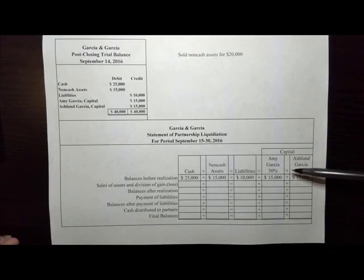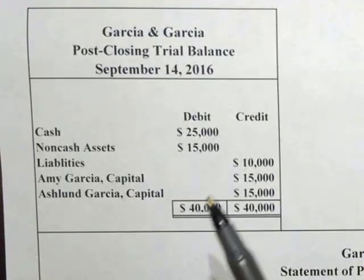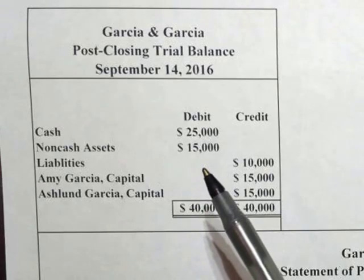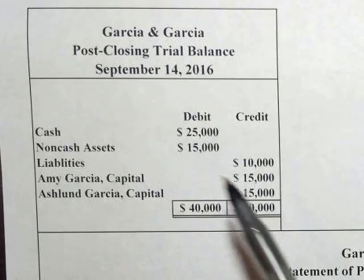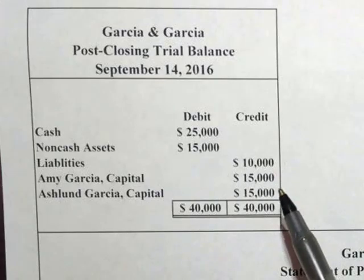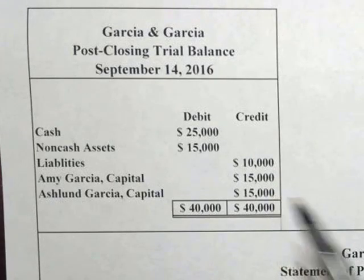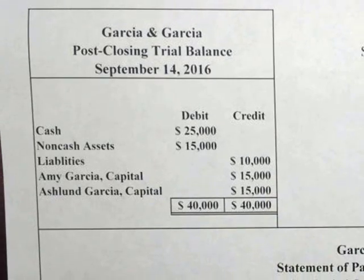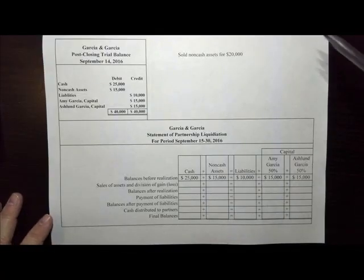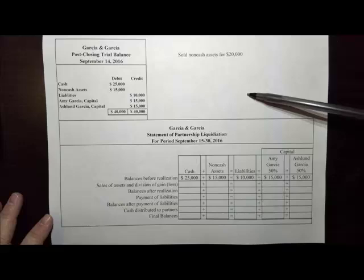Amy Garcia and Ashland Garcia are 50-50 partners and we are going to do a partnership liquidation. They have cash assets of $25,000, non-cash assets of $15,000, liabilities of $10,000, and each Amy Garcia and Ashland Garcia have $15,000 in their capital account.